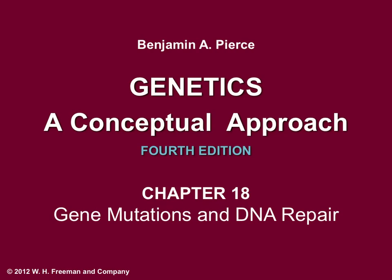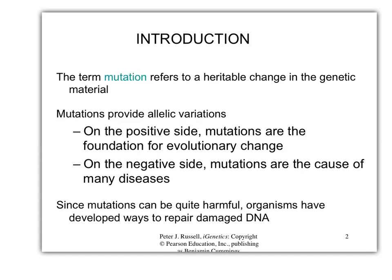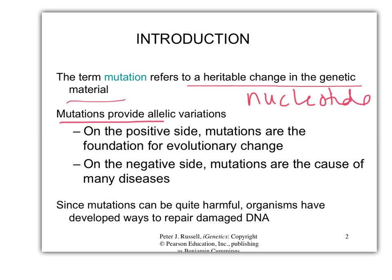We're going to do chapter 18 on gene mutation. A mutation is an inheritable change in the genetic material — generally a change in the DNA base pairing. Mutations at the nucleotide level are the only thing that can change alleles and provide allelic variation. The only difference between one allele and another is changes in nucleotides, as long as there aren't so many changes that the gene loses its function entirely.